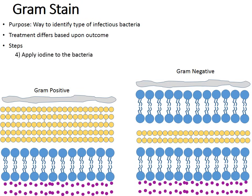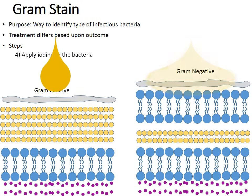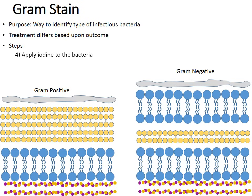The next step is to add iodine, which has a brownish-golden-bronze color. The iodine molecules pass through the layers and actually bond and bind with the crystal violet molecules that previously entered, clumping together and making the molecule bigger.